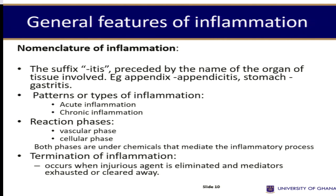There are two main patterns: acute inflammation and chronic inflammation. In this session, we'll be dealing with acute inflammation. There are two phases — the vascular phase and the cellular phase — that we'll be concentrating on. Eventually, inflammation is terminated when the mediators are exhausted, the injurious agent is cleared away, along with the exudates.